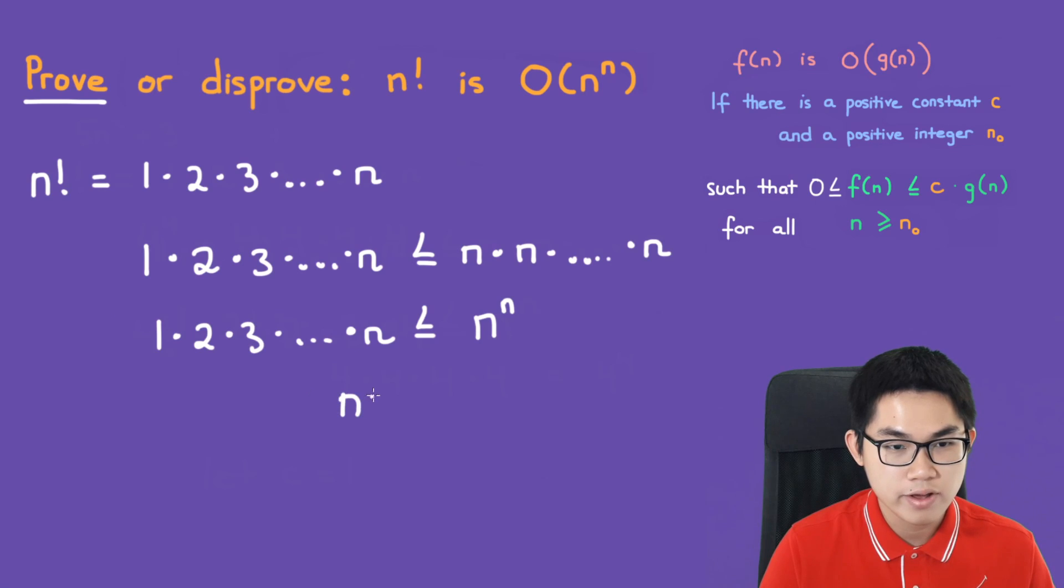Over here, this is n factorial, which is basically less than or equal to n to the power of n. You can also think of this having a coefficient of 1. Because of this, it means we found our c. Our c will be equal to 1.